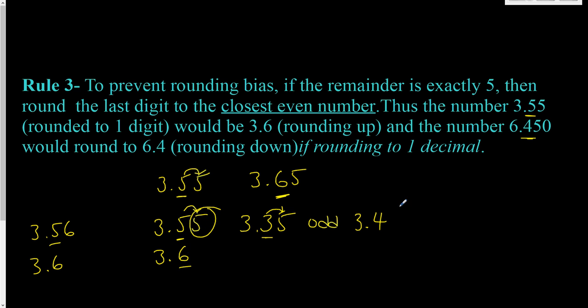Now, rounding bias - let's flip this around. The example in our question here is 6.450. We're again rounding to the tenths. Here's our five, so we look at the five, same as we did before, to see what we're going to do with this place.